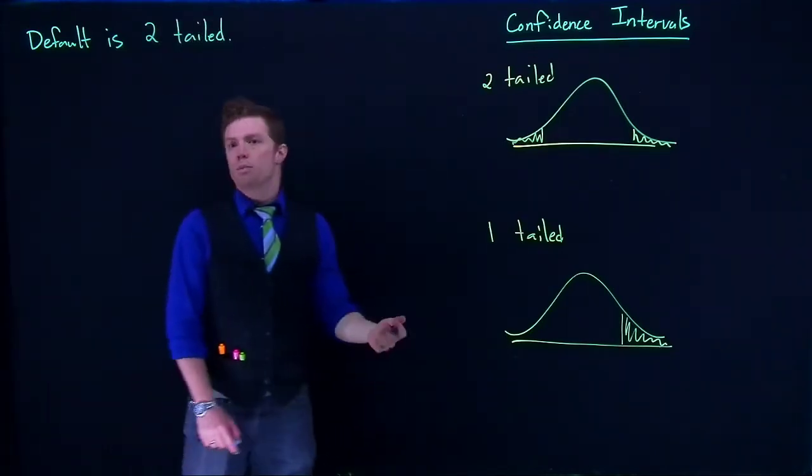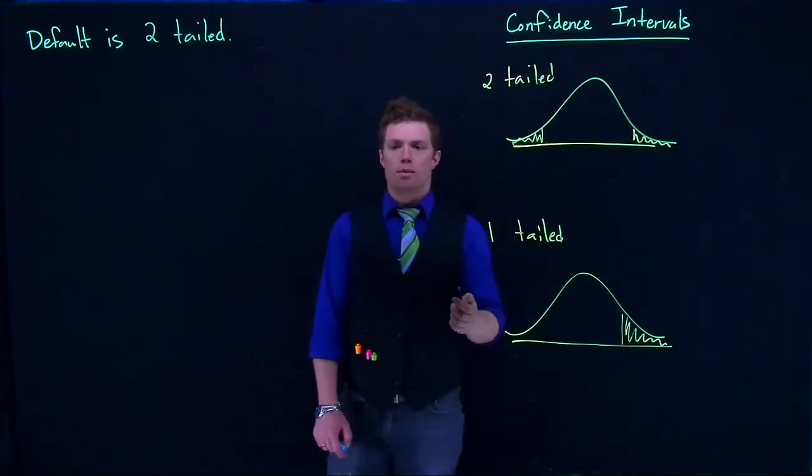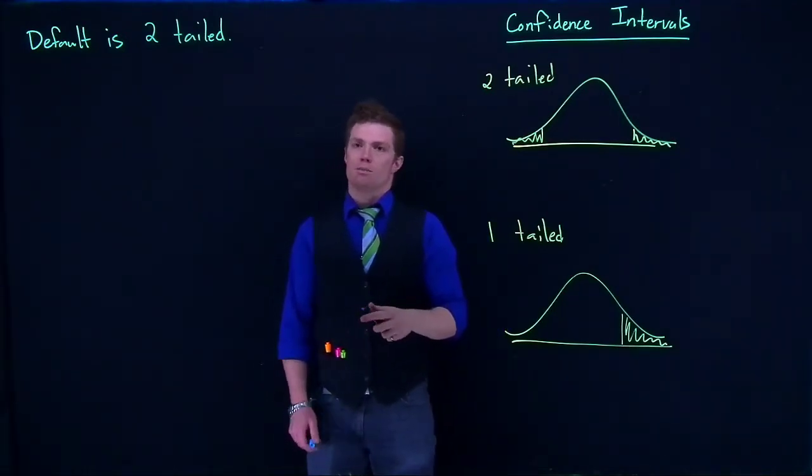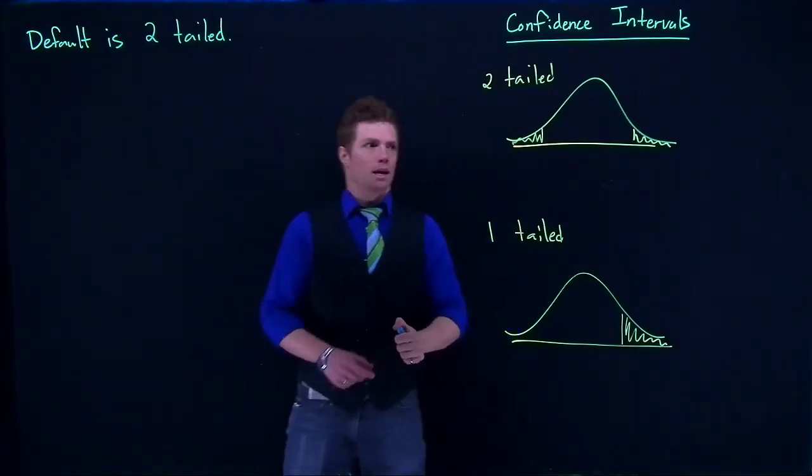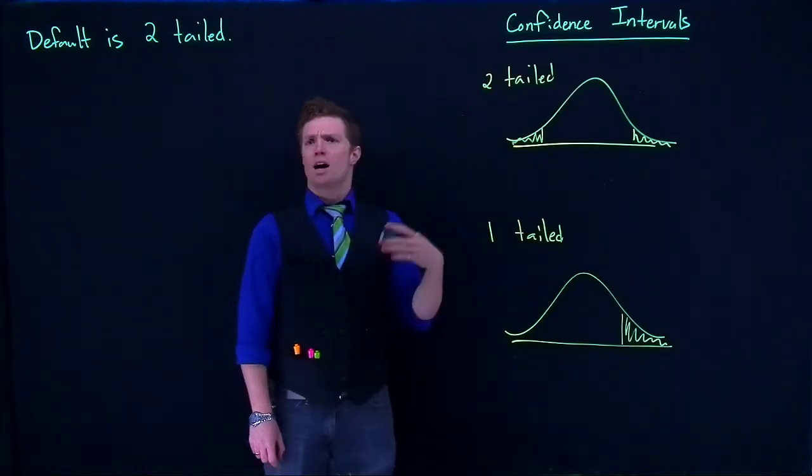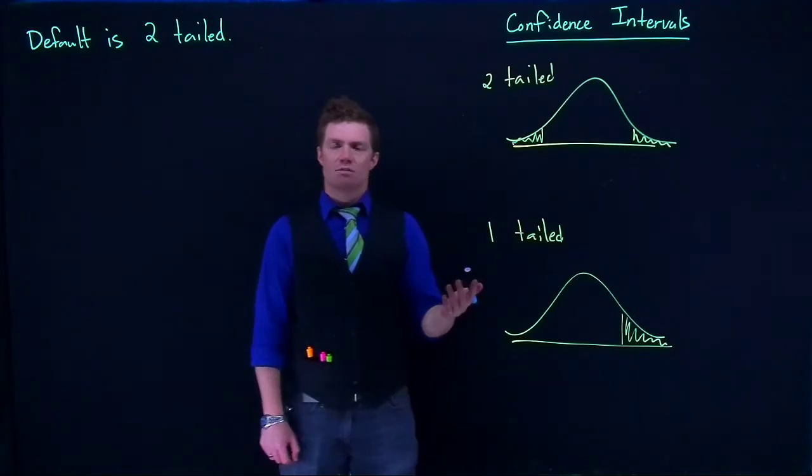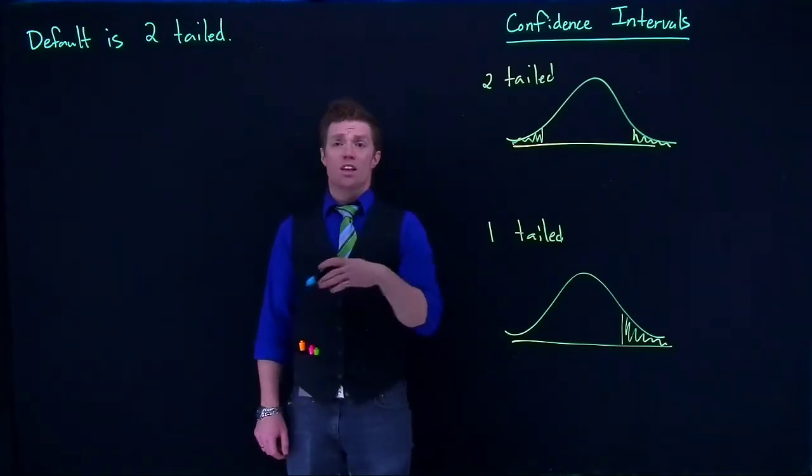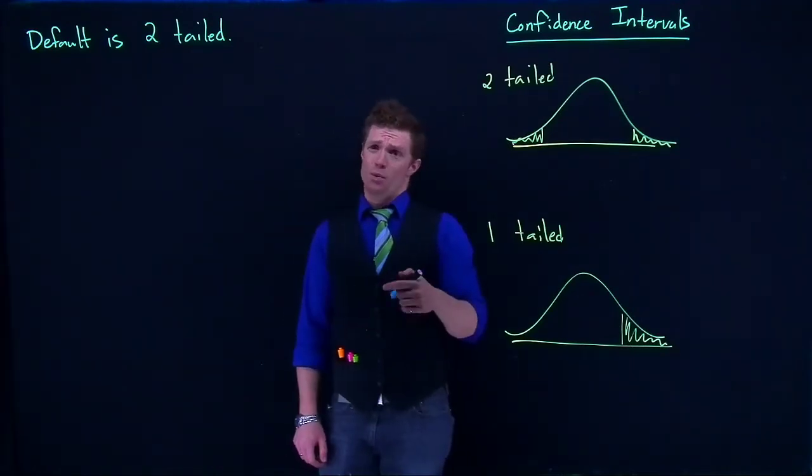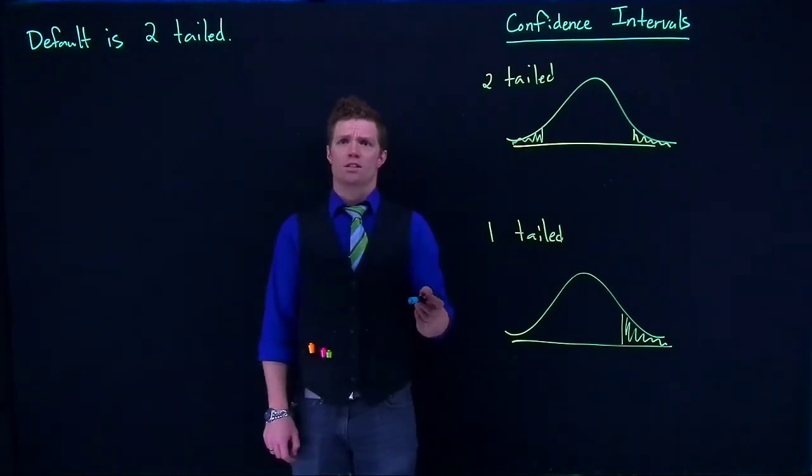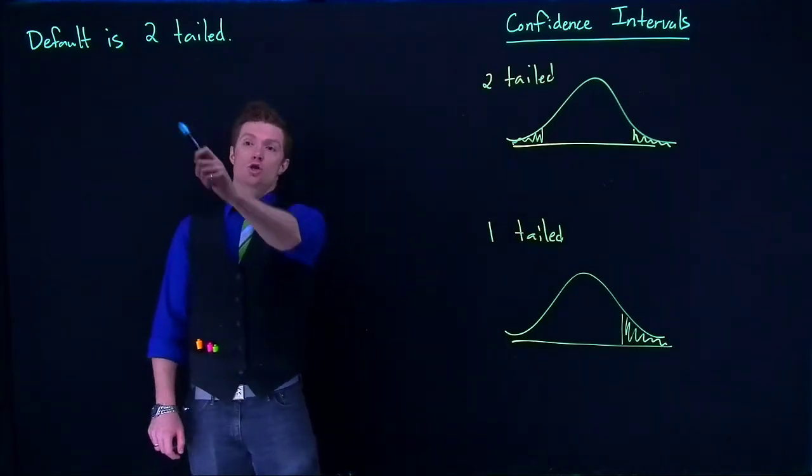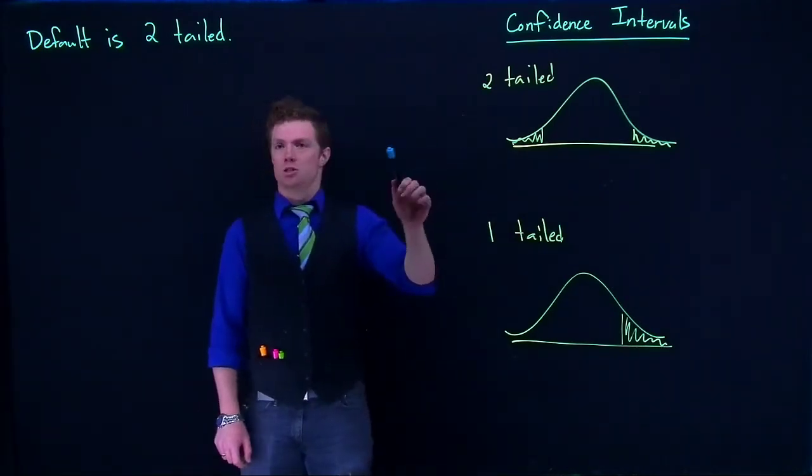So let's suppose that we are doing some word problem and we're talking about, we want to have the confidence interval of the approval of some senator. And if nothing is said except other than we want to do like a 95% confidence interval, the default is a two-tailed test. It's just what the default is.